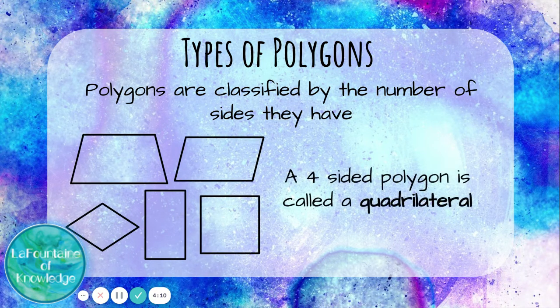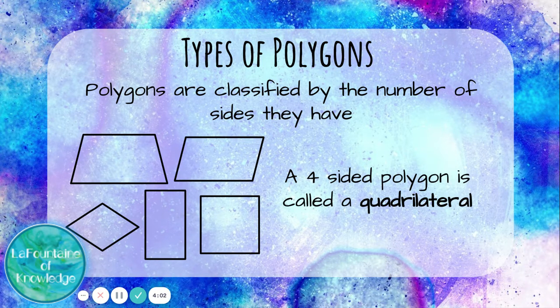A four-sided polygon is called a quadrilateral. There are also several types of quadrilaterals, like trapezoids, parallelograms, and rectangles. But all quadrilaterals are four-sided polygons.